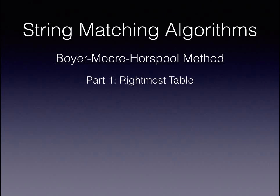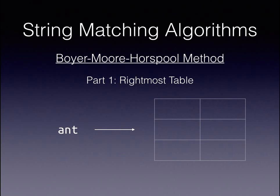The rightmost table stores the rightmost position of each character in the pattern. With our original pattern, the values in the rightmost table are simply their location in the string. The letter A is the first character, the letter N is the second character, and the letter T is the third character.